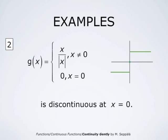The function g(x), defined by setting g(x) equals x divided by the absolute value of x when x is different from 0, and 0 otherwise, is discontinuous at x equals 0. Since x divided by |x| is 1 if x is positive and −1 if x is negative, g has left and right-hand limits at x equals 0, namely −1 and 1. These limits do not agree, so the function does not have a limit at that point. The value of the function at 0 is 0, therefore it is not left continuous nor right continuous — it is simply discontinuous.